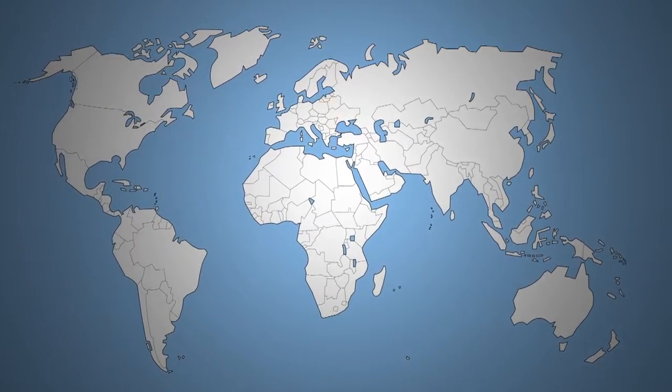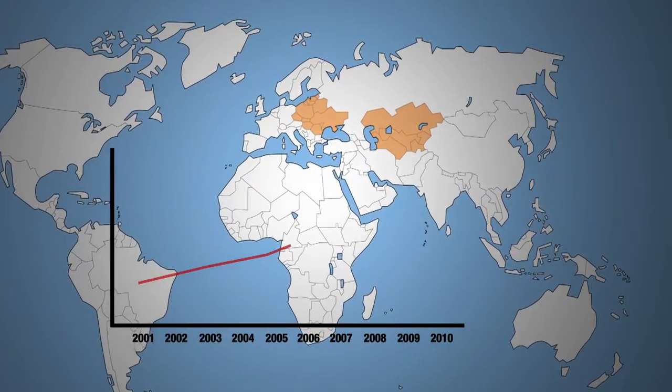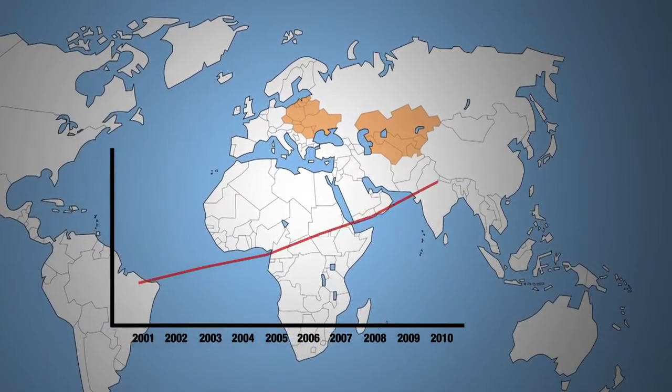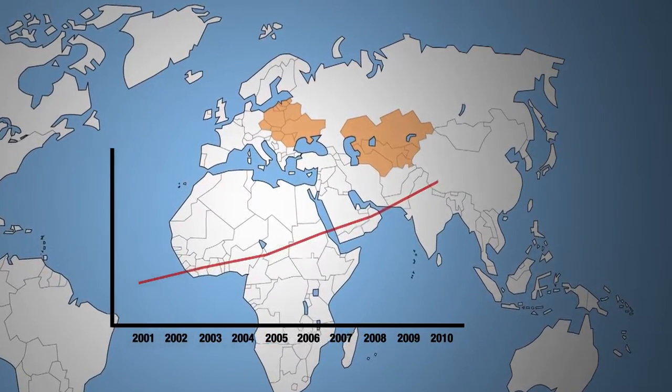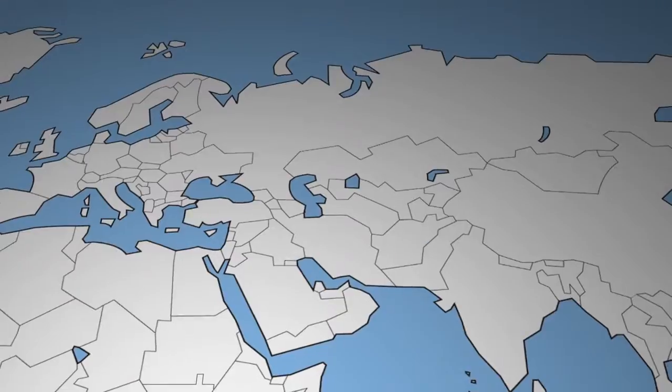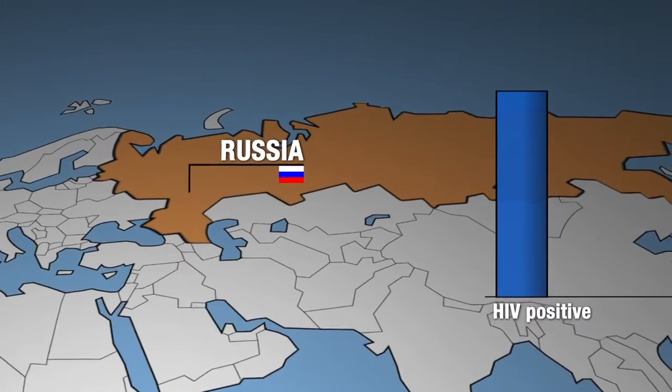But in Eastern Europe and Central Asia, the number of people living with HIV has increased by 250% between 2001 and 2010. In Russia, the number of HIV positive cases almost doubled between 2006 and 2012.